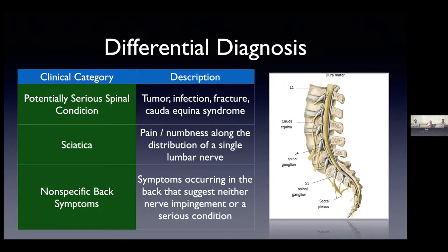A better way to think about back pain is to put patients into three categories: potentially serious spinal conditions — tumor, infection, fracture, and so forth; sciatica, which is a fairly generic term for any pain or numbness that radiates from the back into the lower extremity, usually on one side, following the distribution of a single nerve; and lastly, nonspecific low back pain — symptoms that don't imply nerve impingement or a serious underlying condition.